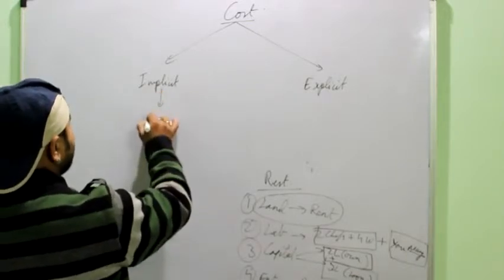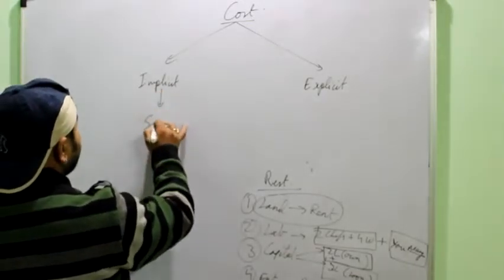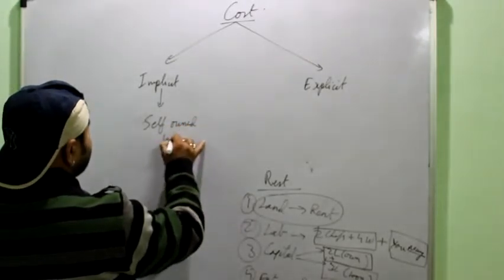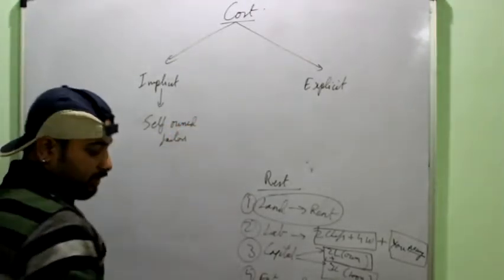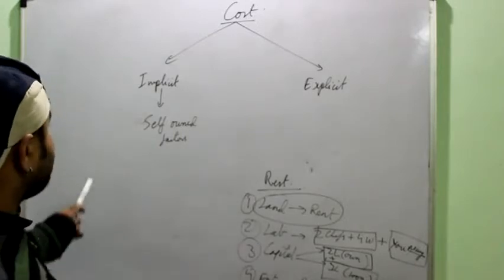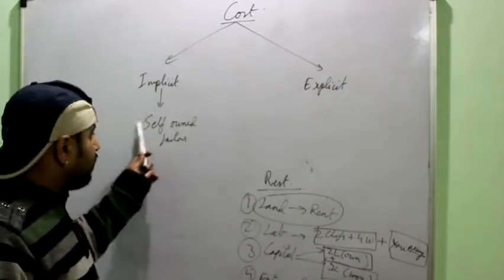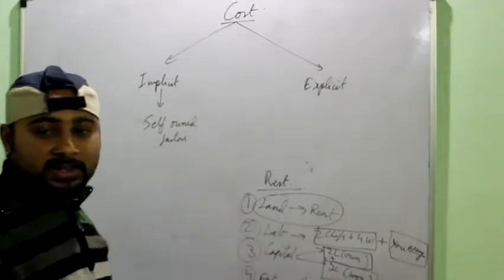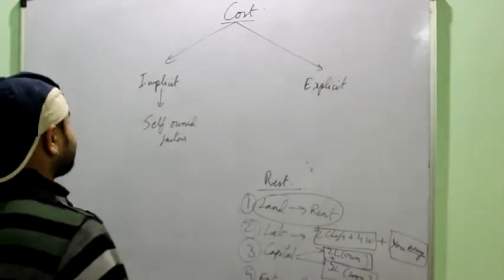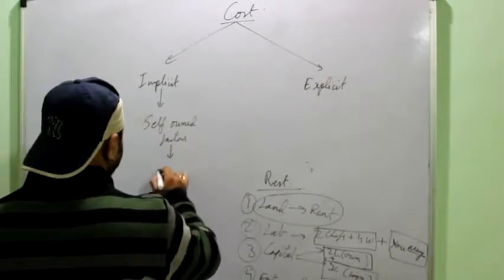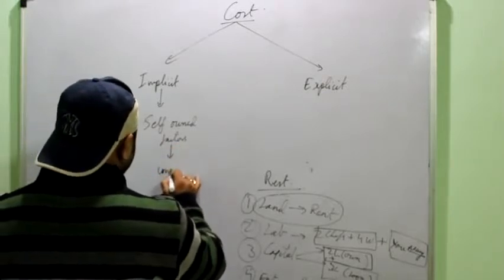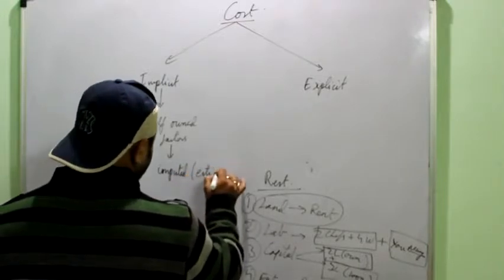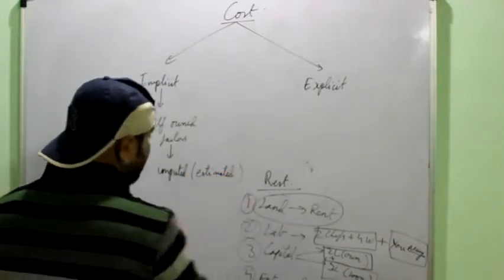So, simply implicit is the cost of the self-owned factors of production. If you want to define implicit cost, it is simply the cost of the self-owned assets, self-owned factor of production which you are using in the production process. And always remember, you take their imputed value, imputed or estimated value.